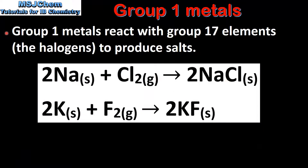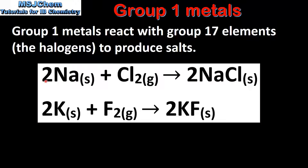Finally, we look at the reactions between group 1 metals and group 17 elements. Group 1 metals react with group 17 elements, which are also known as the halogens, to produce salts. Here we have two examples. The first example is the reaction of sodium and chlorine to produce sodium chloride.